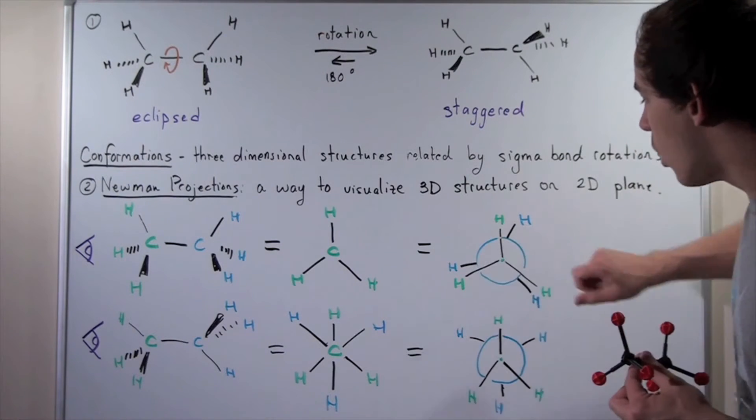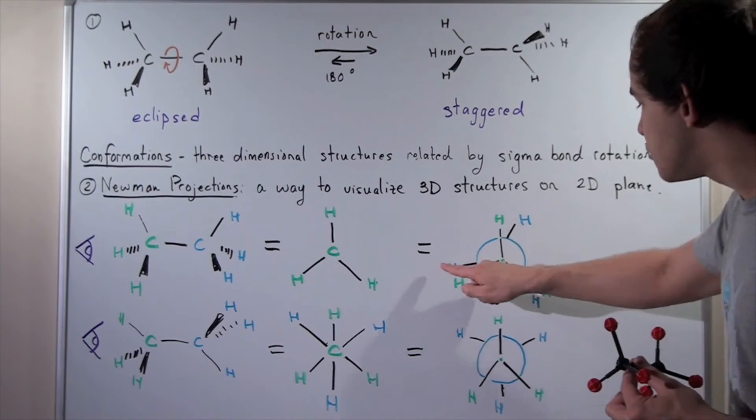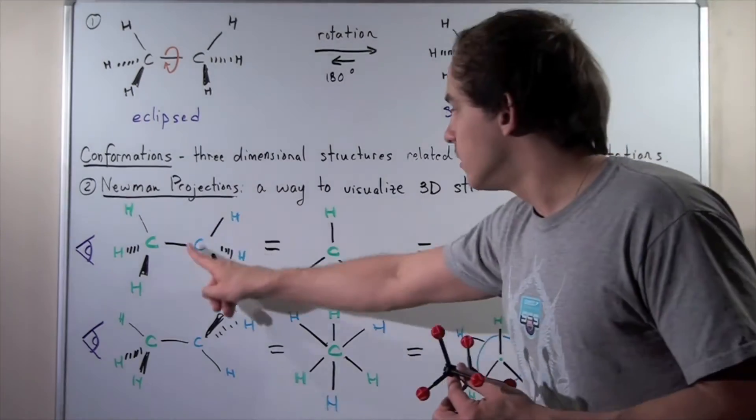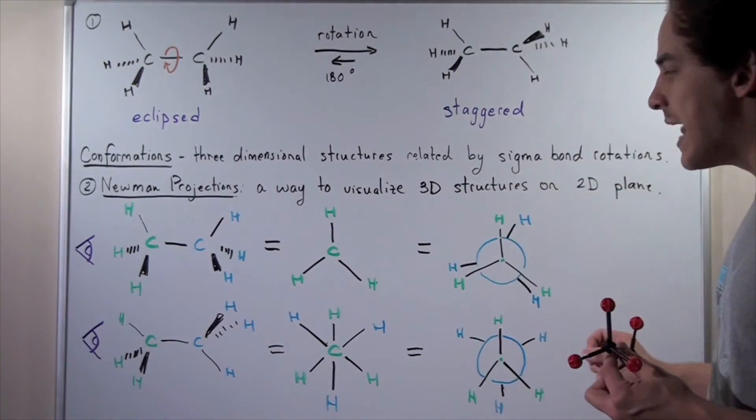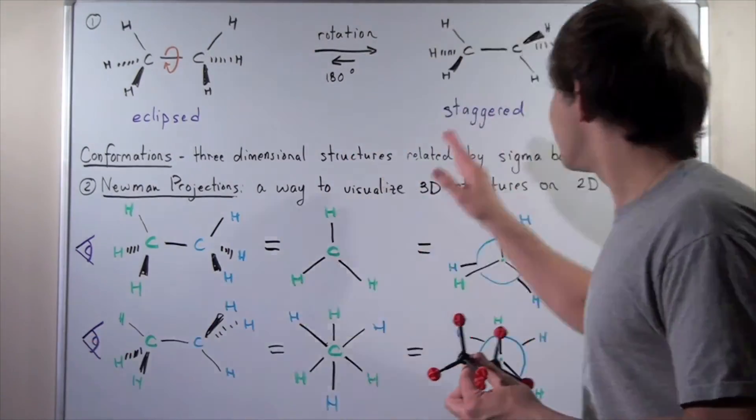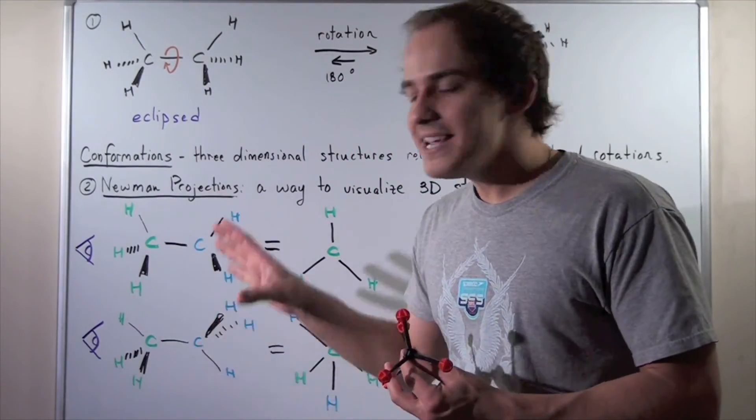So our carbon 1, our carbon 2, and the C-H bonds in the back like we have here. For the staggered conformation, it gets a little bit easier.